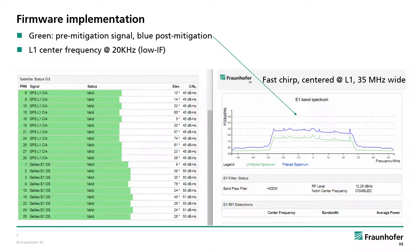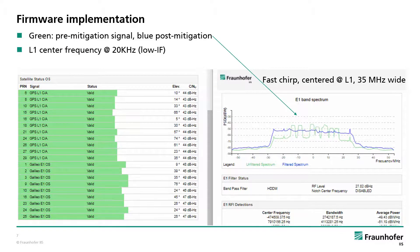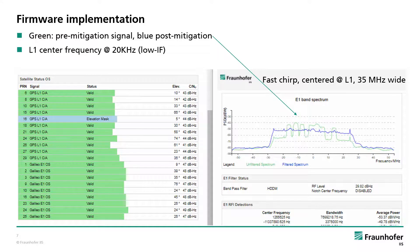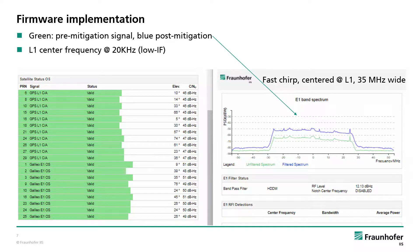Lastly, to demonstrate that the HDDM is a practical method, a firmware implementation shows the real-time operation of the HDDM. Here, the spectrum before and after the HDDM is shown against an exemplary wideband chirp signal. At the same time, almost no reduction in tracking performance of a GNSS receiver is shown.